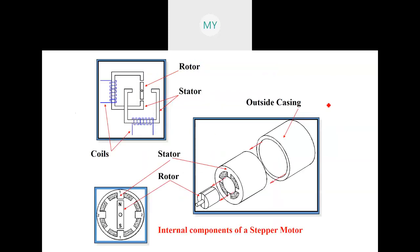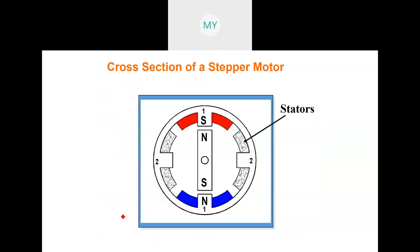These are the internal components of a stepper motor. You can see two stators, two coils, and a rotor. Here we have a rotor, four poles of the stator coil and two poles of the rotor. This is the cross-section of the stepper motor.